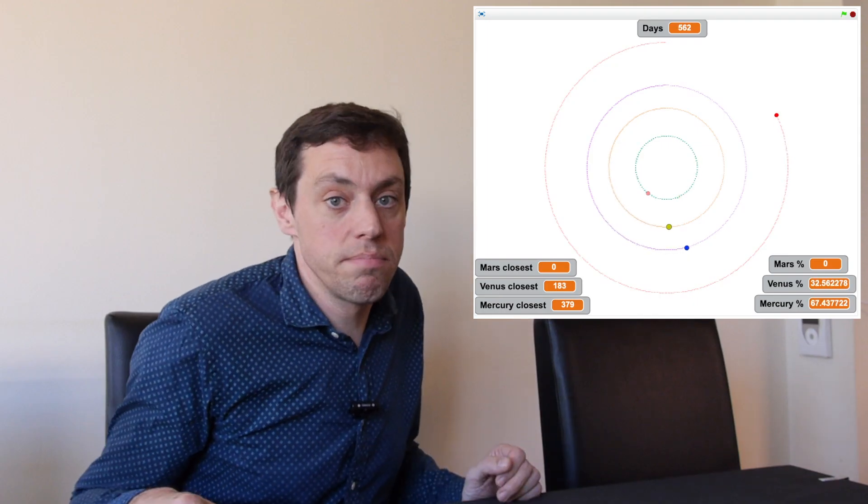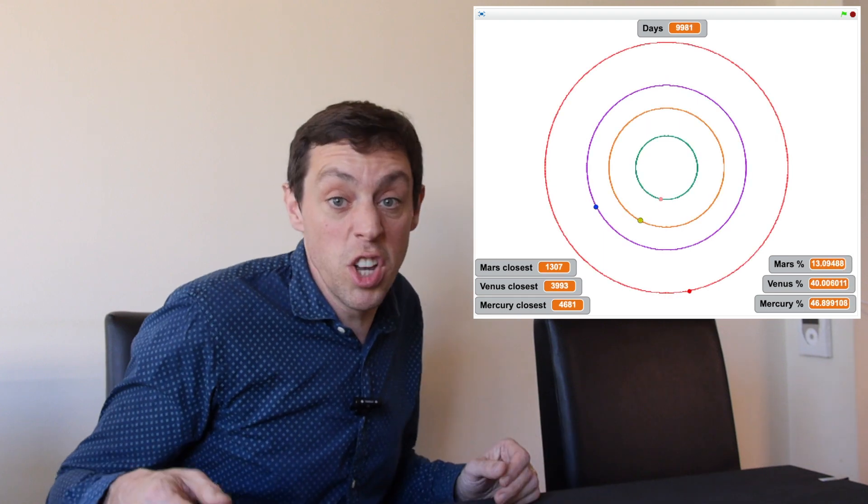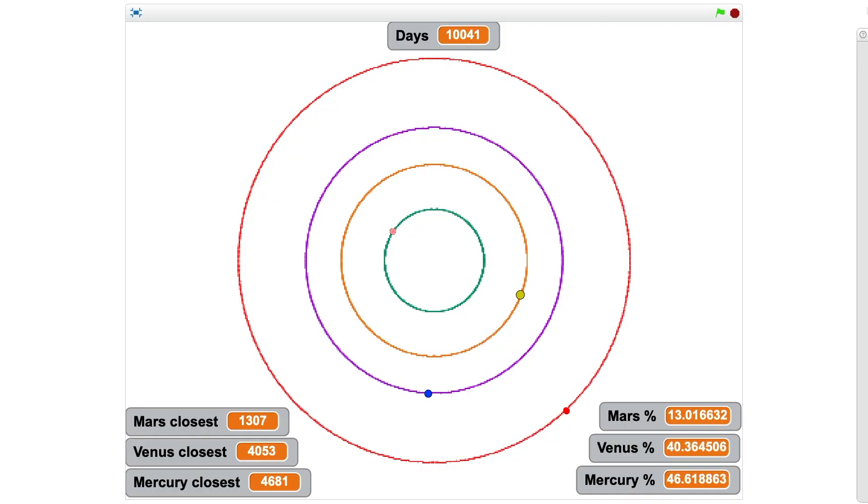Let's move this forward a bit, let's say about 10,000 days, it's about 30 years. Now you can see in the bottom right there, it tells you the percentage of time that Earth is closest to each planet.